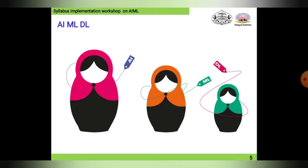Now moving to the next slide: AI, ML, and DL. You can see three dolls in the figure. Artificial intelligence is the biggest doll on the left side. ML is the orange-colored doll in the middle, and deep learning is the green doll on the right side. This indicates that AI is the biggest performer overall. Without AI, ML has less value, and without AI and ML, deep learning has even lesser value. This is the physical representation of AI, ML, and DL.